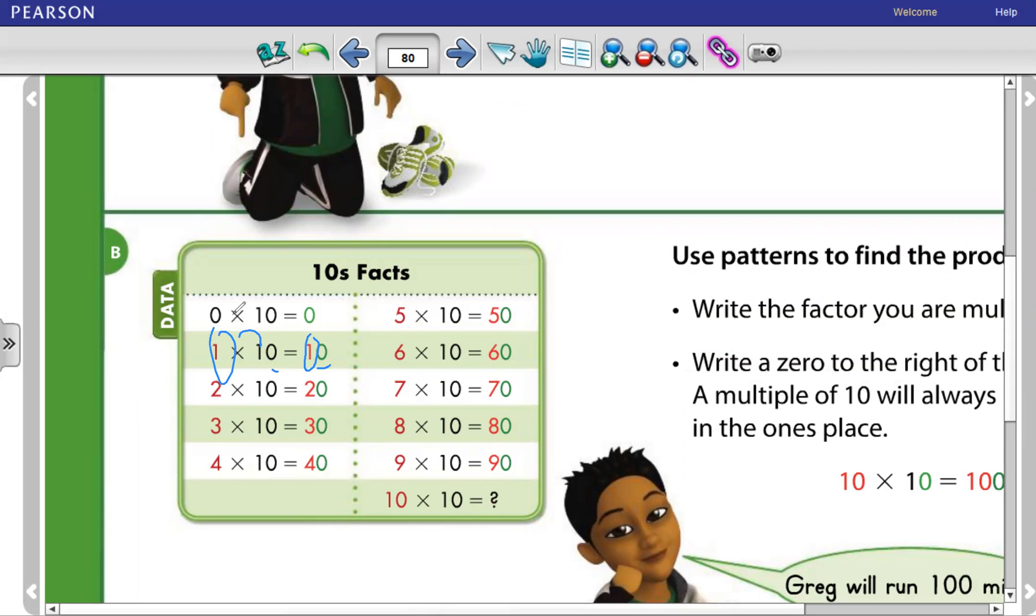And 2 times 10. 2 times the 1 equals 2. Then the 0 of the 10, it becomes 20. The same for the others. 3 times 10. I multiply 3 times 1 equals 3. And the 0 of the 10, it becomes 30. And so on.